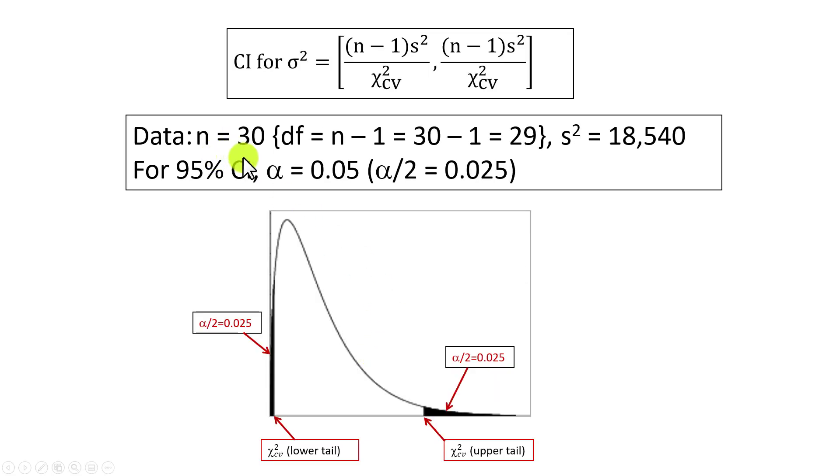In this simple example, where we have 30 observations of 30 firms' operating income, we find that the degrees of freedom is 29, which is 30 minus 1. The sample variance of the firms' operating income is 18,540. This value is referred to as a point estimate because it's a single value with which to infer the underlying population variance of incomes.